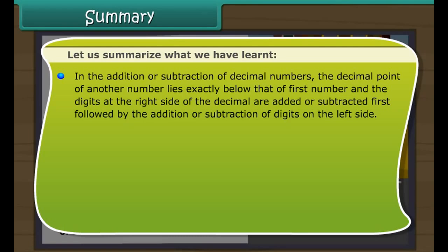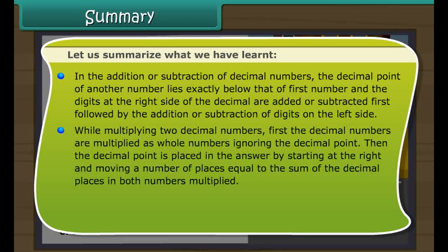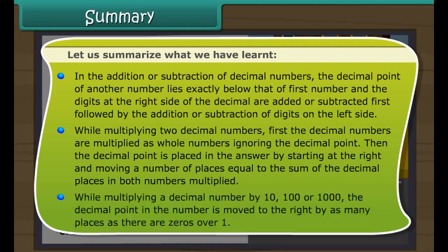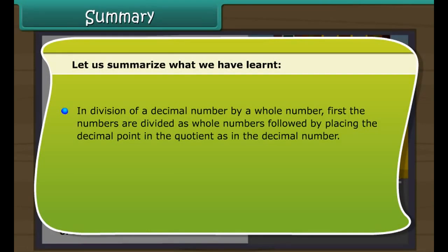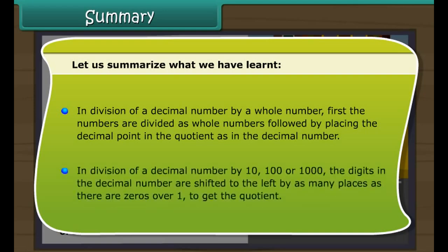Summary: in addition or subtraction of decimal numbers, the decimal point of one number lies exactly below that of the first, and digits on the right side are added or subtracted first, followed by the left side. While multiplying two decimal numbers, first multiply as whole numbers ignoring the decimal point, then place the decimal point by moving from the right a number of places equal to the sum of decimal places in both numbers. When multiplying a decimal number by 10, 100, or 1000, the decimal point moves to the right by as many places as there are zeros.